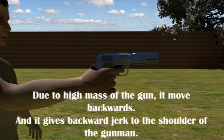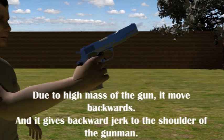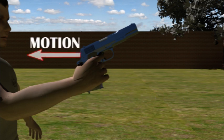Due to high mass of the gun, it moves backwards and gives backward jerk to the shoulder of the gunman. This backward motion of the gun is called the recoil of the gun.